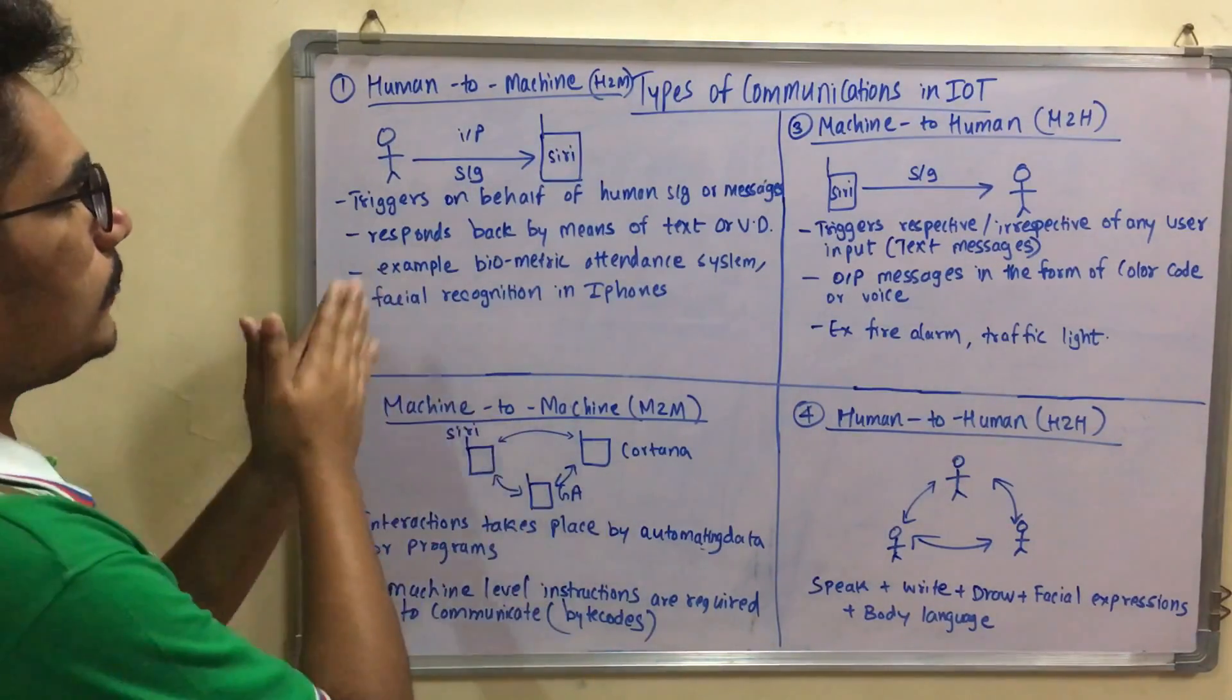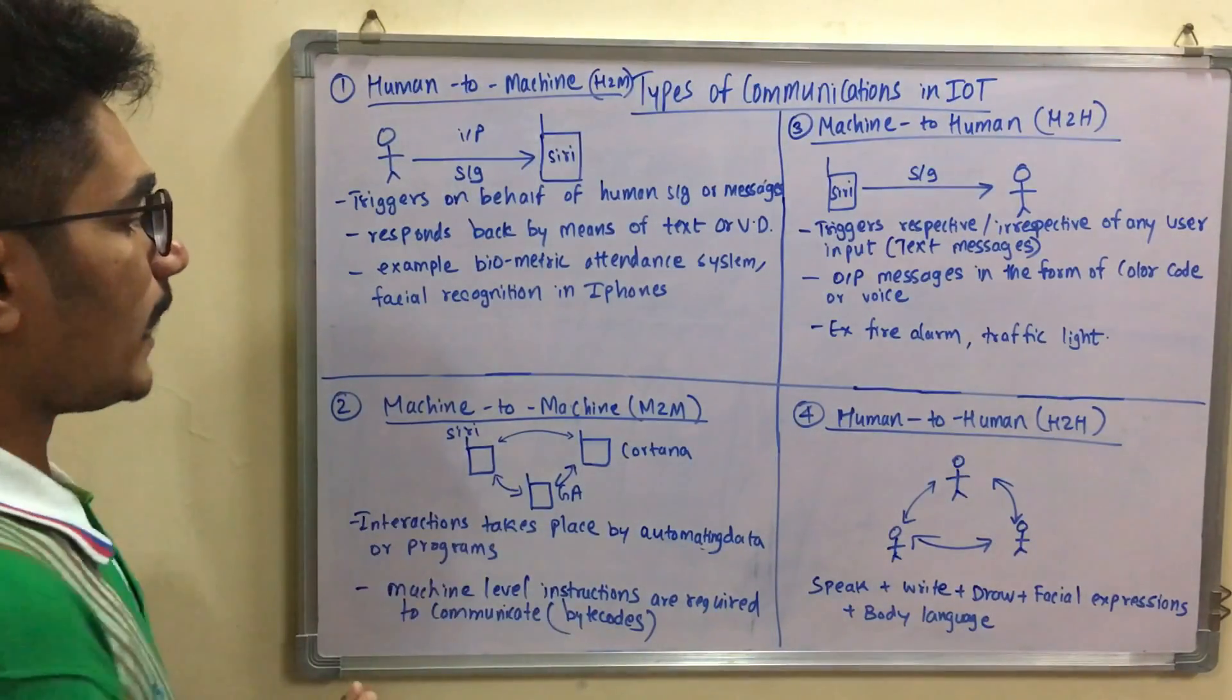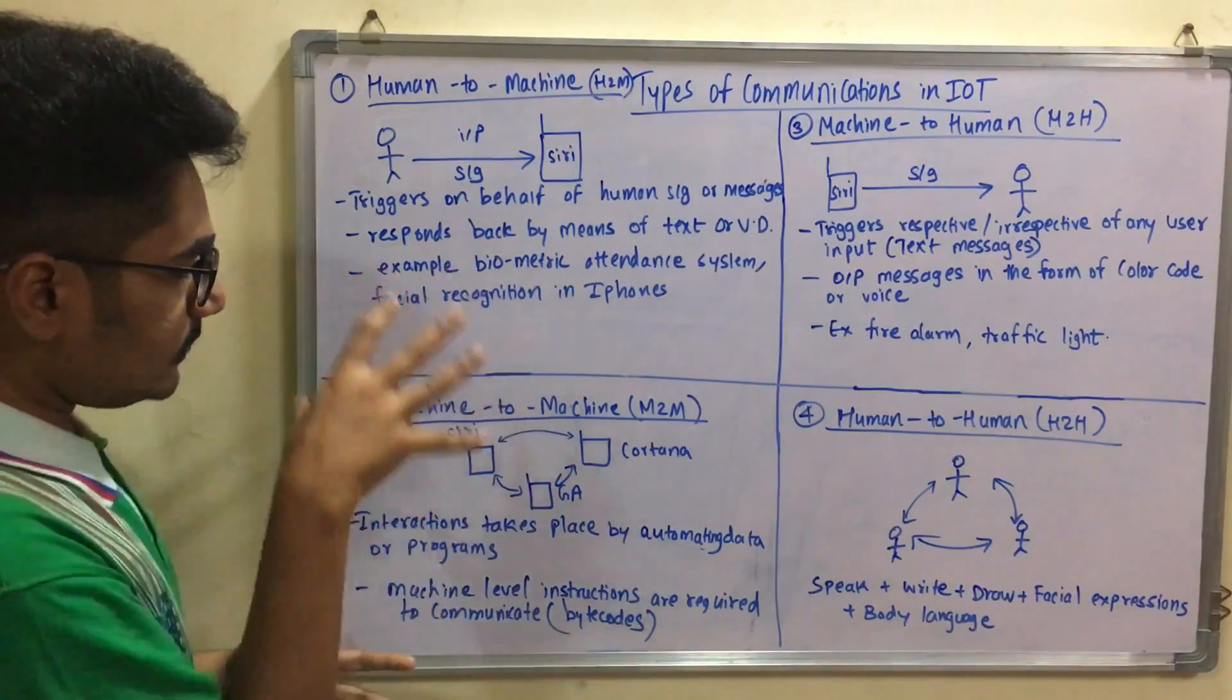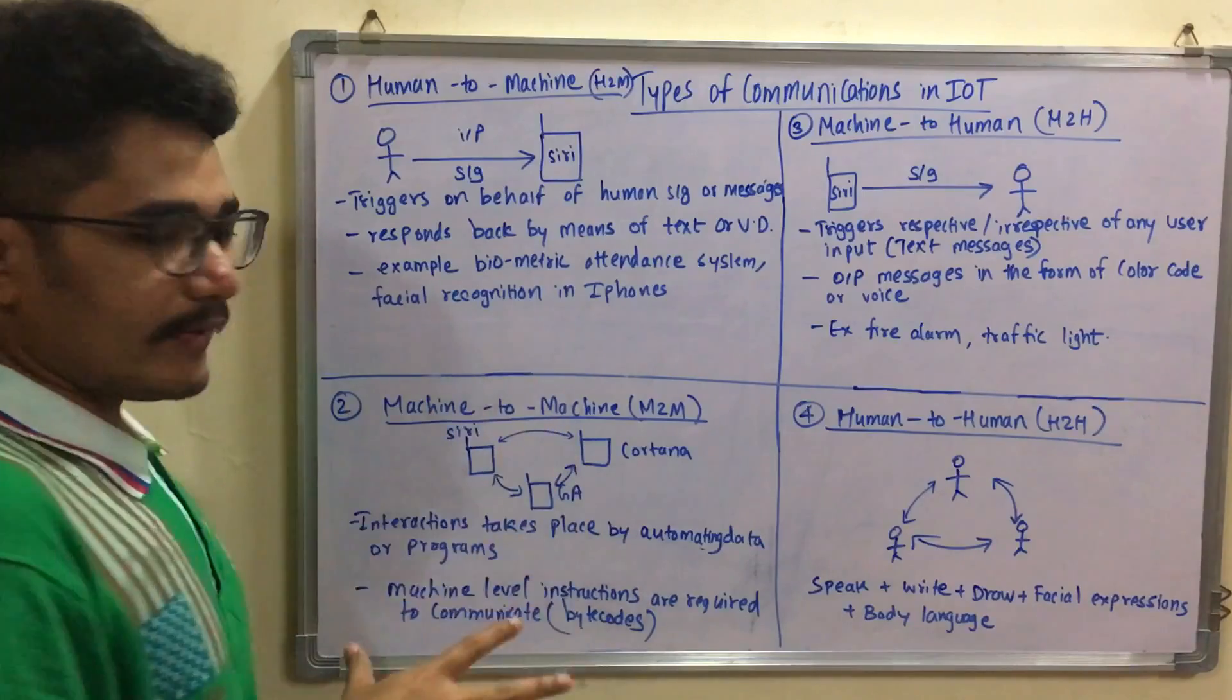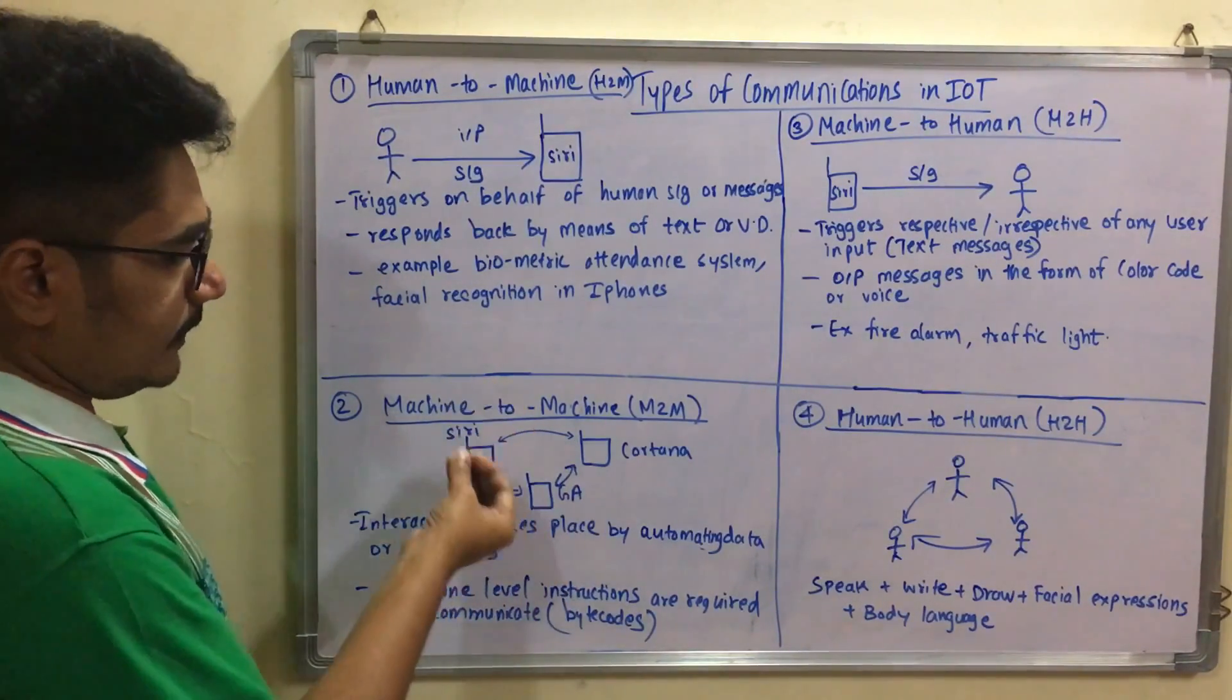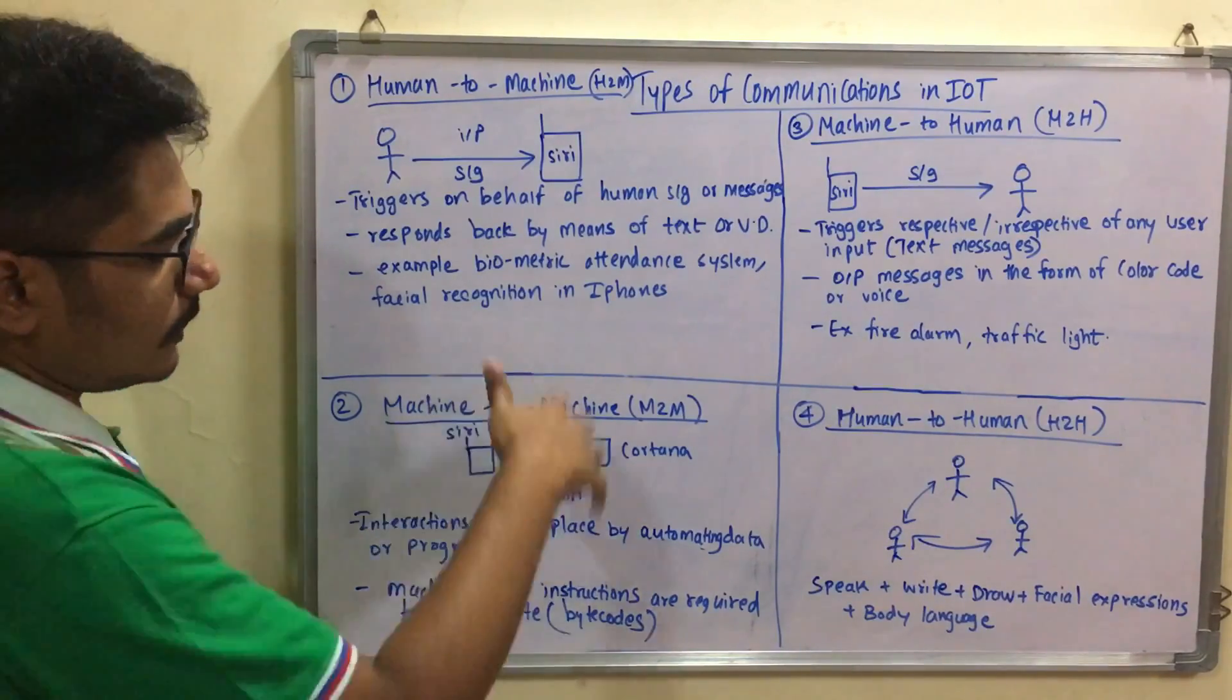The second type is Machine to Machine interaction, M to M. In this we have a group of devices with no human intervention. We have a Siri device, a Cortana device, and a Google assistant device. You can find videos on YouTube showing how these three devices communicate with each other, and the responsiveness is very fast. Siri triggers an input signal to Cortana, which triggers it to Google assistant, working in round robin fashion or randomly based on how the algorithm is configured.